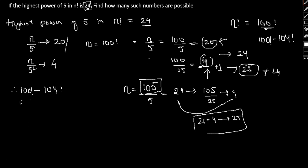our answer in this regards will be numbers that is from 100 to 104 factorial. That is 5 numbers. So, this is one way of doing this by simply